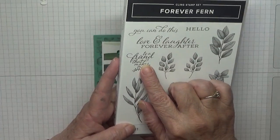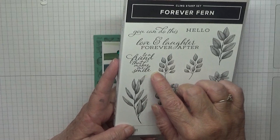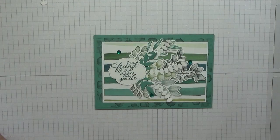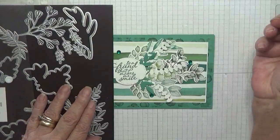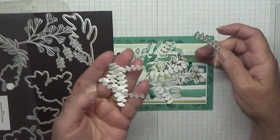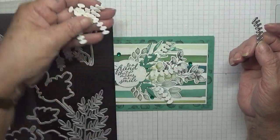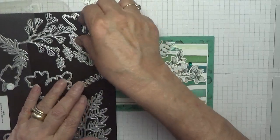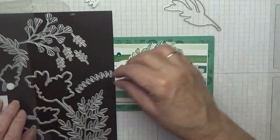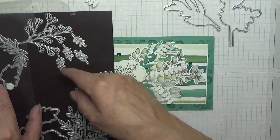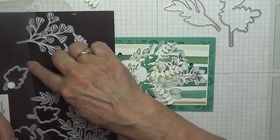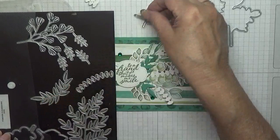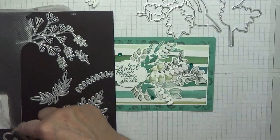I use all the leaves plus the sentiment 'to a friend that makes me smile', and I'm also using the dies. Might as well get them out. This one I've already cut. I cut out loads when I made this card and I only use three, so I've got a few left over. We need that one, that one, the two small leaves, this leaf and this one.